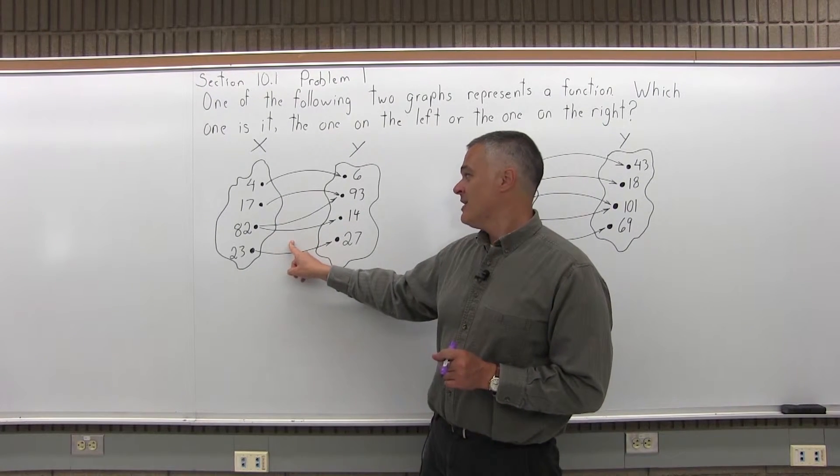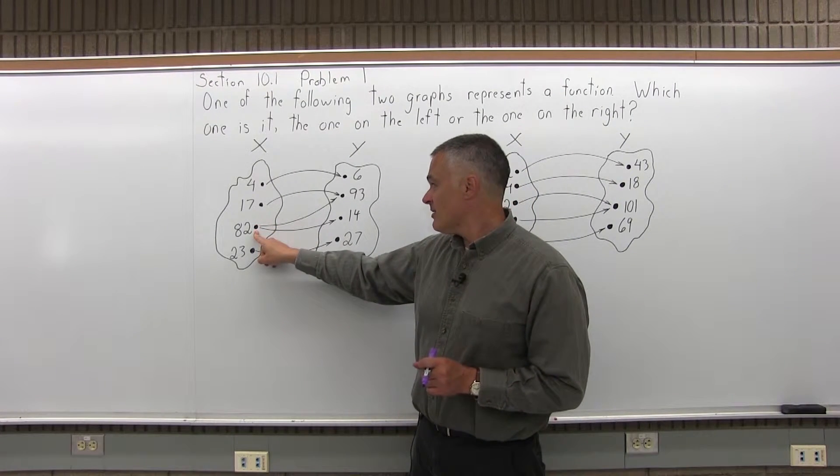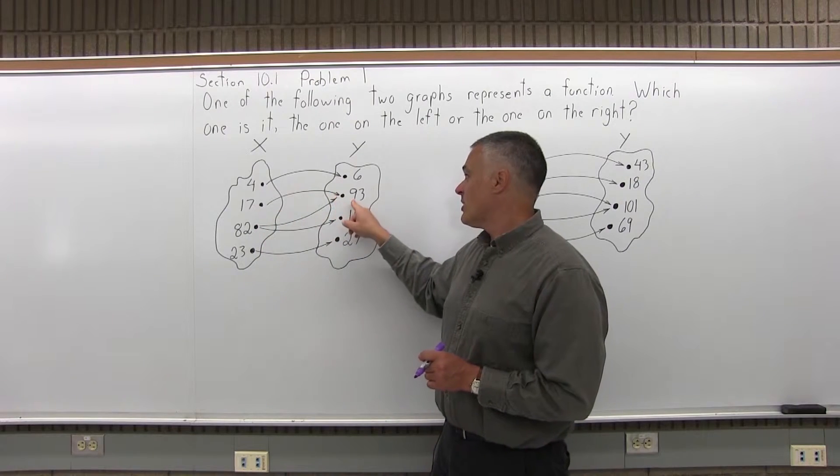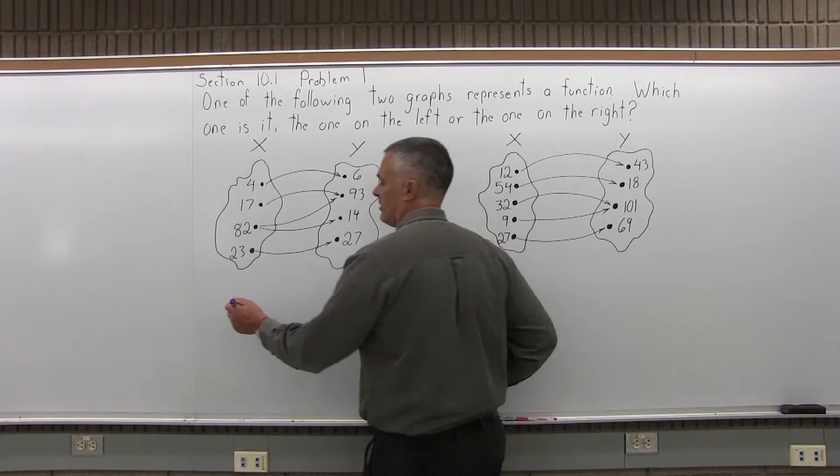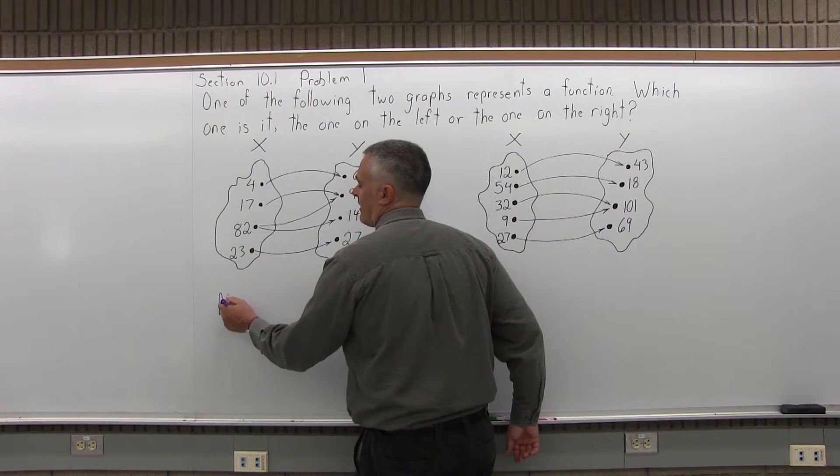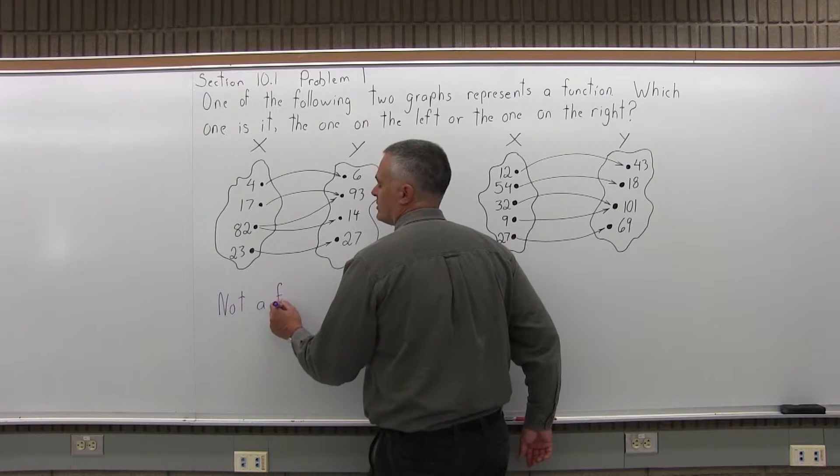You break that one rule. And the one rule is broken on the graph on the left. Because if you put in an 82, the function doesn't know whether to give out a 93 or a 14. You break the one rule. So the graph on the left is not a function.